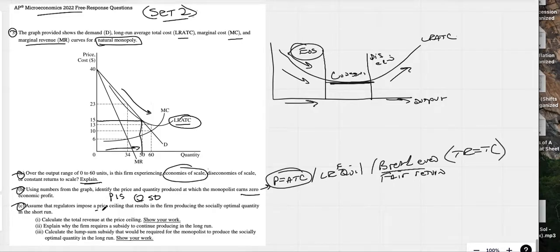Assuming that regulators impose a price ceiling that results in the firm producing the socially optimal quantity, you need to know that the socially optimal quantity is also the allocatively efficient quantity.